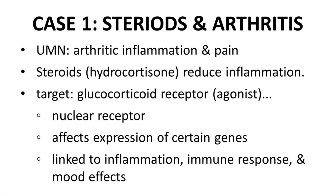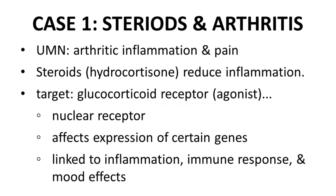In the early 1900s, arthritis pain was a growing, unmet medical need and often a debilitating problem. In the mid-1900s, steroids — namely hydrocortisone and closely related compounds — were found to have anti-inflammatory activity to treat arthritis pain. As these compounds became more available, they were widely prescribed to manage arthritis pain. One of the targets bound by hydrocortisone is the glucocorticoid receptor, which is a nuclear receptor. The glucocorticoid receptor affects gene expression in the nucleus, and the genes affected are linked with inflammation, immune response, and mood.